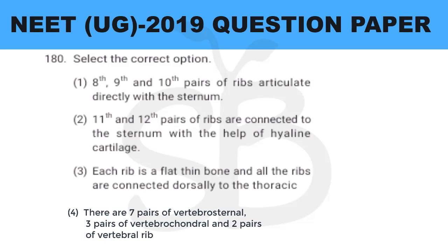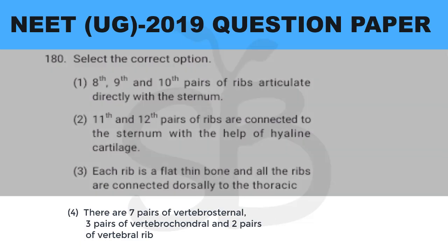And the last question, question number 180: select the correct option. This is from plus 1 biology chapter on locomotion and movement. The correct answer is option 4: there are seven pairs of true ribs, three pairs of vertebrochondral ribs, and two pairs of floating ribs.